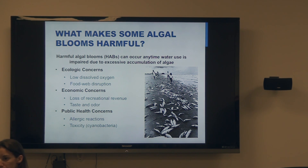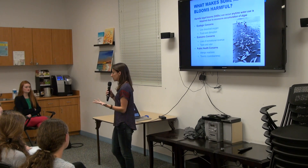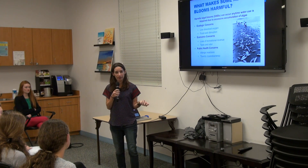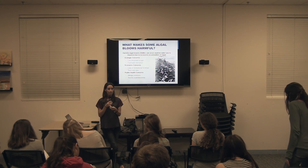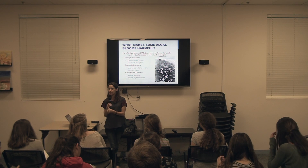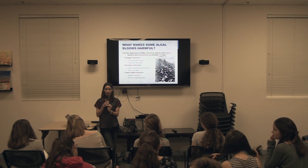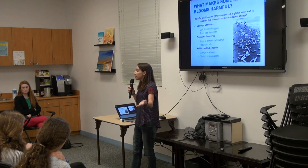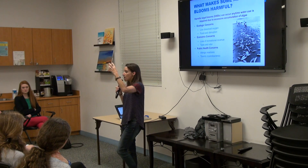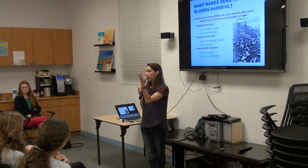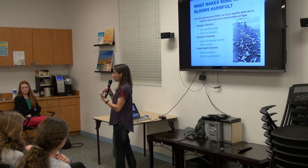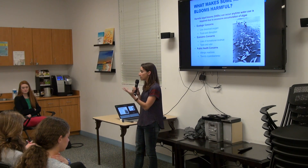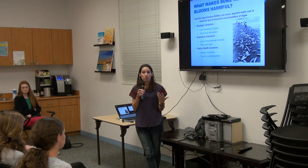Now here's a question: if algae are plants, and plants photosynthesize and create oxygen, how could a bloom — a massive occurrence of these plant-like organisms — cause low dissolved oxygen? It's a little counterintuitive, isn't it? It's such a rapid accumulation of these algae that they start to smother each other out. They're no longer getting light. As they decay and die and settle out, all that decay results in low dissolved oxygen because the bacterial breakdown, the natural decaying process of all that plant matter, results in low dissolved oxygen situations.